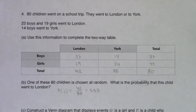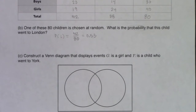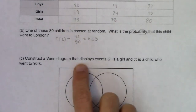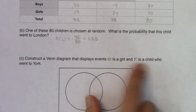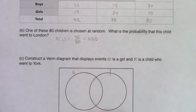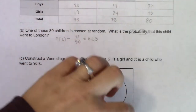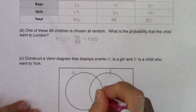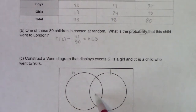Now it's going to say take that information and construct a Venn diagram. I can almost get my table and my Venn diagram in the same view. This is saying: let the Venn diagram display event G — girls — and Y — a child who went to York. So let me put G and Y here. Whenever you're mapping a table to a Venn, these main four numbers have to go into these four areas. I always start by putting my pencil in the football — the overlap.